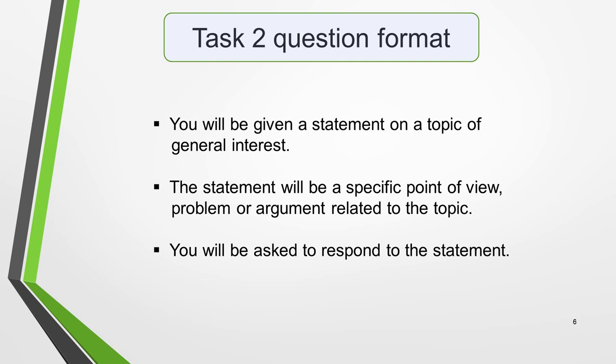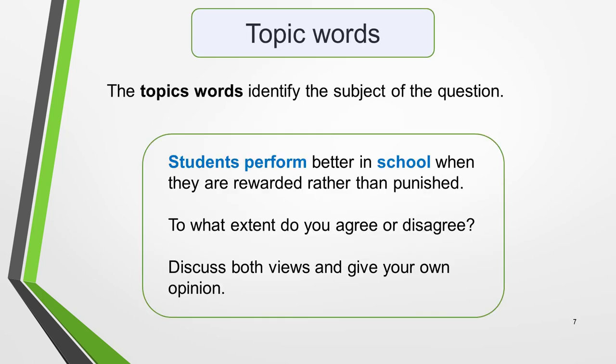Now we'll identify the three different types of words in our sample question. The topic words are the ones that identify the general subject of the question — you can see them highlighted. So this question is about how students perform in school. Many people do this first step and then write about the topic in general. This is a serious mistake and leads to low marks.